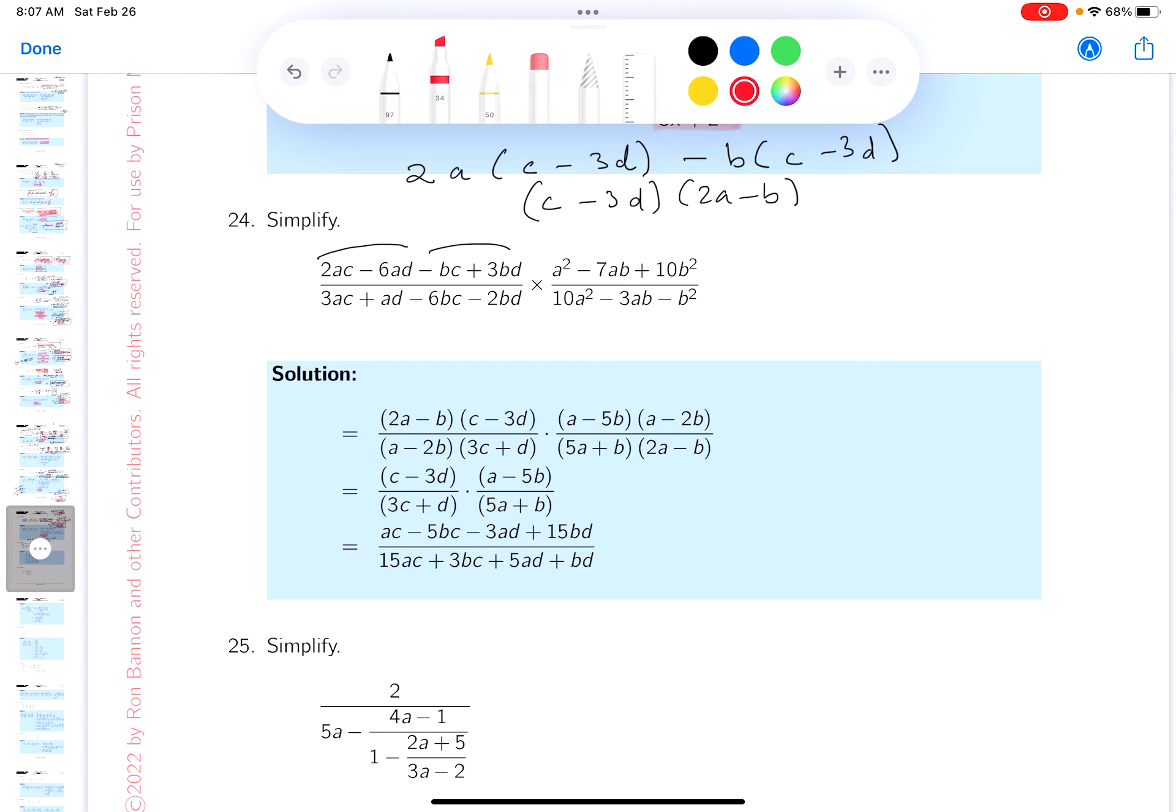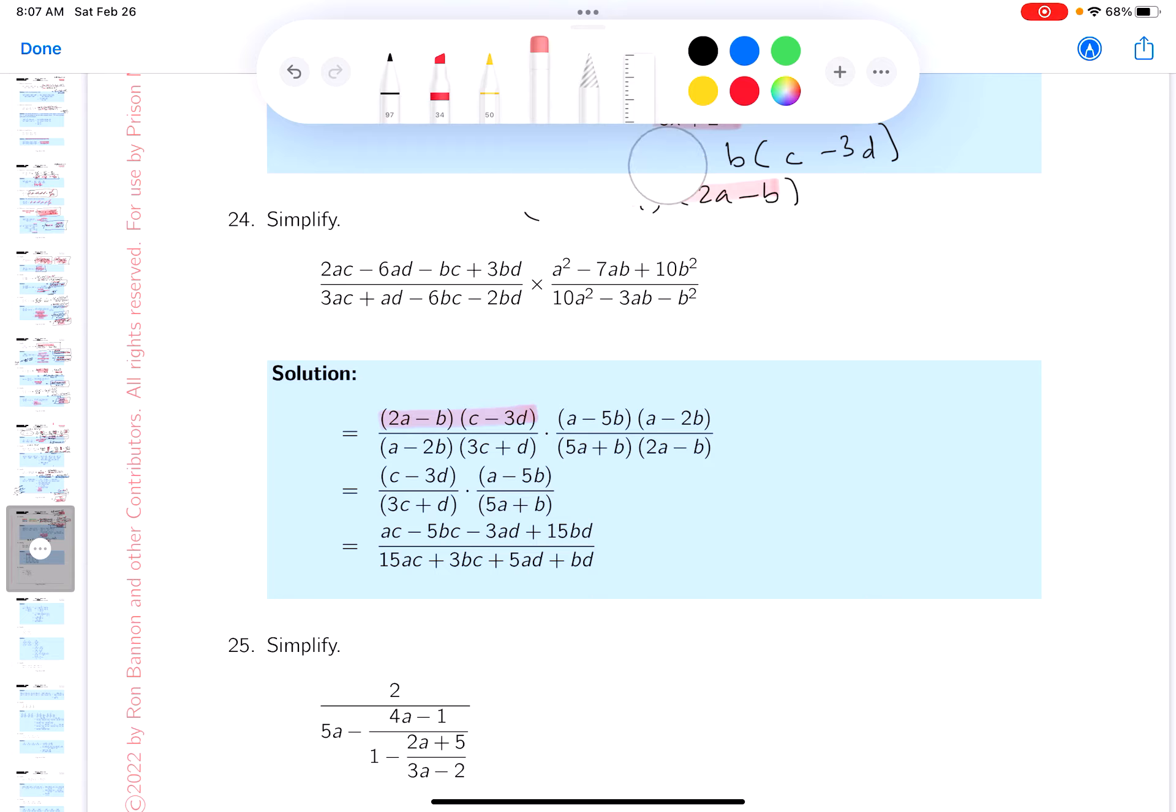What I want to do - I want to make sure that if I were studying this thing, that I understood what they did here. That's part of studying. Do I see it here? Well, I see the 2a minus b and I see the c minus 3d, so I feel good about that. I'm going to go to the next one now.